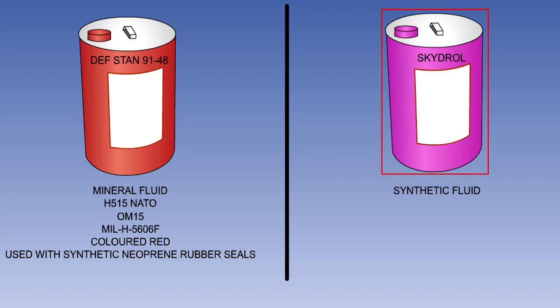SkyDrol is a phosphate ester-based synthetic hydraulic fluid, which is purple in colour. It is used in hydraulic systems containing synthetic butyl rubber seals. Prolonged exposure would damage skin, and eyes must be protected from it.